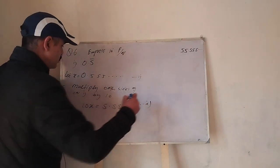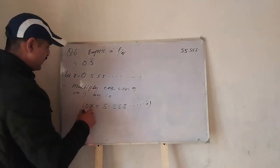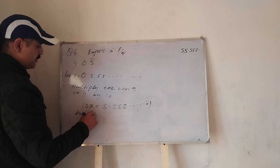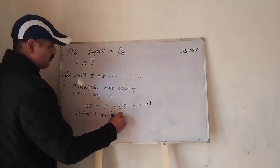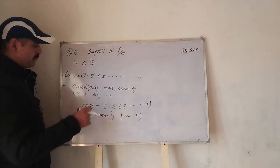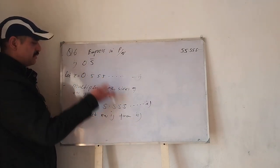Now subtract equation 1 from equation 2, because this number is greater than this. So hum equation 2 se subtract karenge.